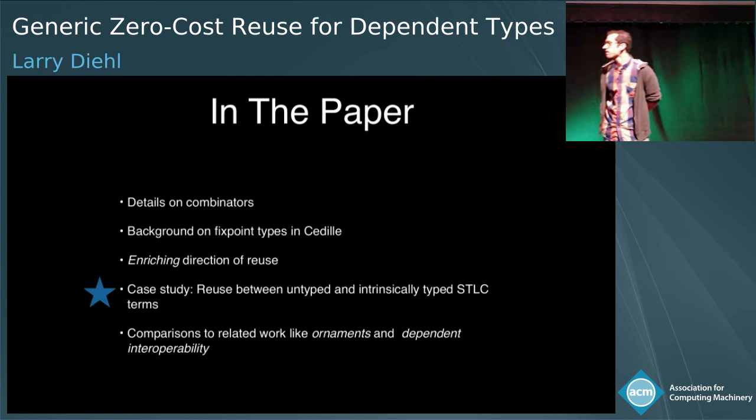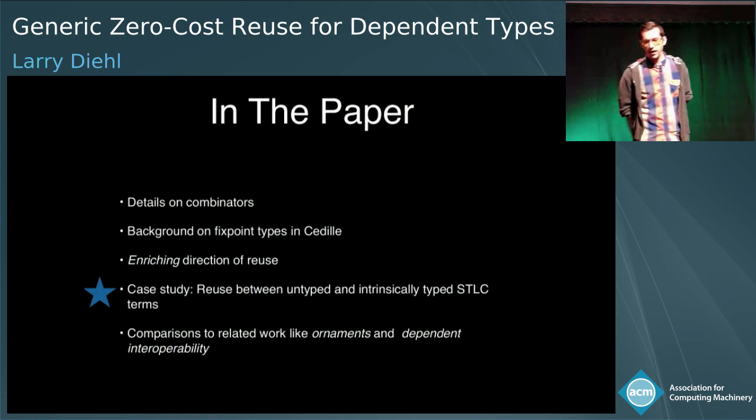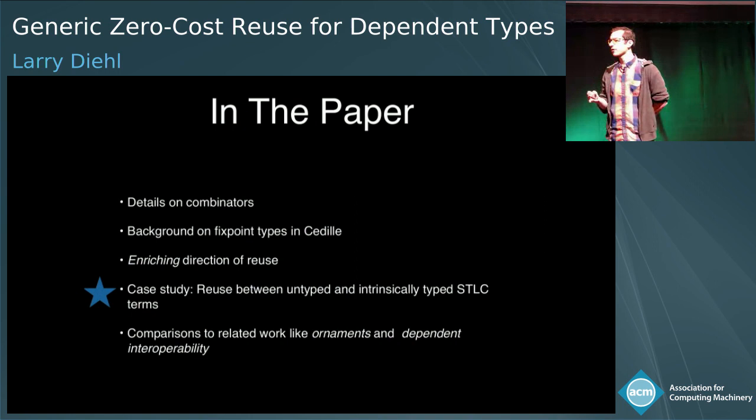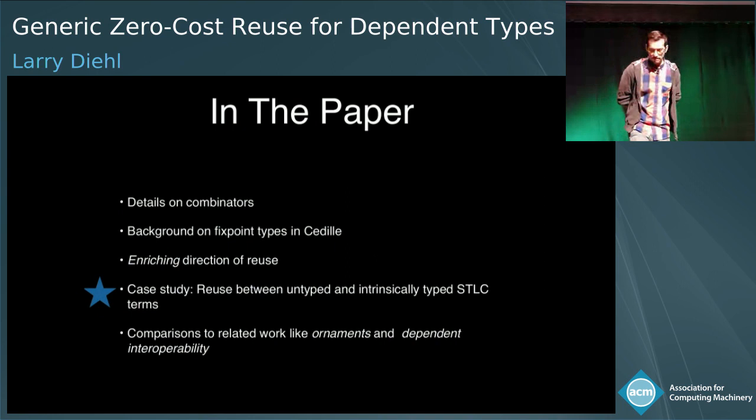Q: How does the erased function space in Cedille compare to irrelevant arguments in Agda or to Nuprl's dependent family intersections? A: The comparison to Nuprl is fairly direct. For Agda, I'm not entirely sure—I know that using irrelevance in Agda you can get runtime performance improvements, but I'm not sure how it works with Agda's definitional equality. Q: What is the type of L2V—don't you need an existential?